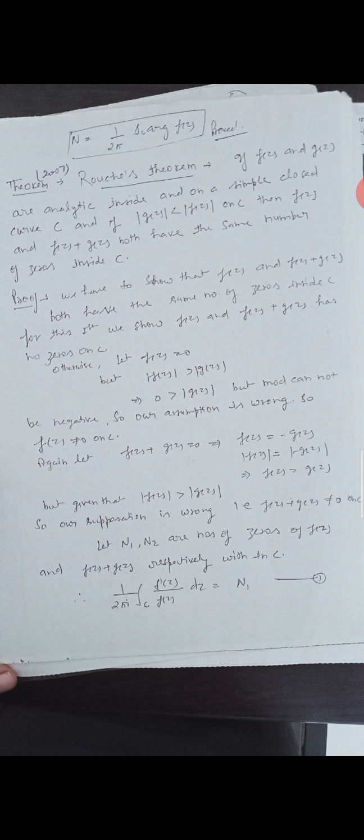We have to show that F(z) and F(z) + G(z) both have the same number of zeros inside C. First, we show that F(z) and F(z) + G(z) have no zeros on C. Otherwise, let F(z) = 0 on C. But |F(z)| > |G(z)|, which implies 0 > |G(z)|. But modulus cannot be negative, so our assumption is wrong. So F(z) ≠ 0 on C.